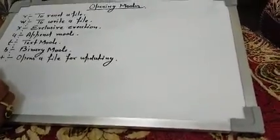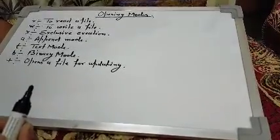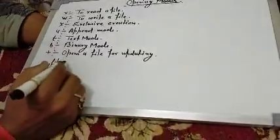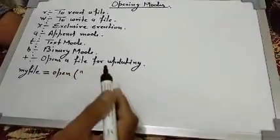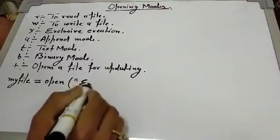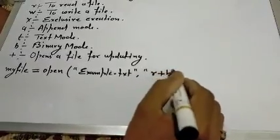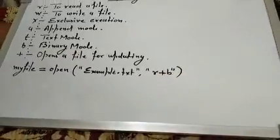For example, to open a file in read and binary mode, we write: myfile = open('example.txt', 'rb'). Here myfile is the file handle, which must be a valid identifier. The file name is 'example.txt' and the opening mode is 'rb', meaning read plus binary.